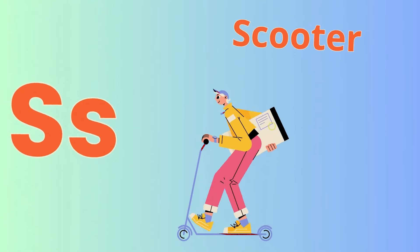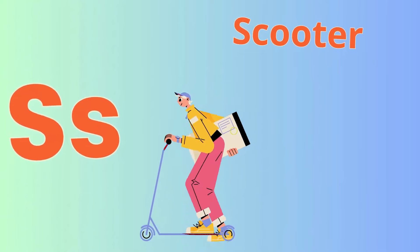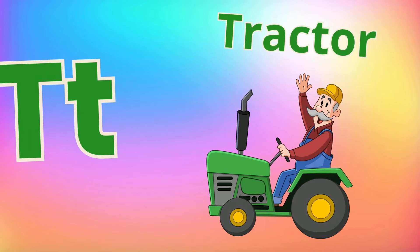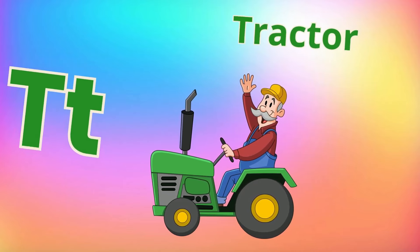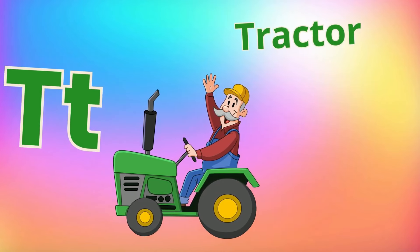S is for scooter, S-S scooter, gliding on the pavement, zip-zip, scooter. T is for tractor, T-T tractor, plowing through the fields, rumble-rumble, tractor.